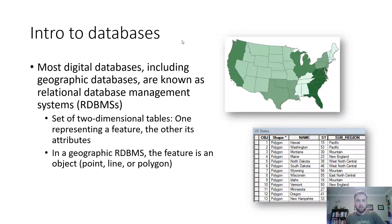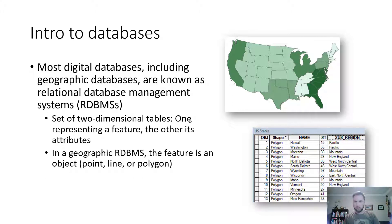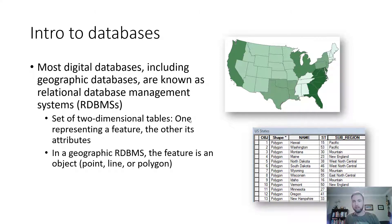In a geographic RDBMS, the feature is an object — a point, line, or polygon. For example, looking at a map of the United States and the associated attribute table, California is not only named as the state of California but also has a sub-region attribute: Pacific. So if you wanted to find every state in the Pacific region, you'd query sub-region equals Pacific, and that would return Washington, Oregon, California, Hawaii, and Alaska — the states they have in common.